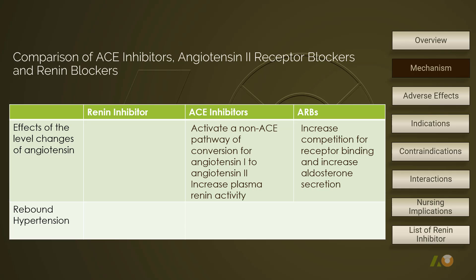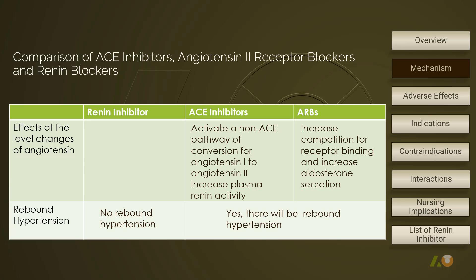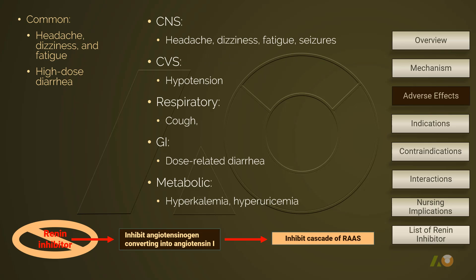As ACE inhibitors decrease the level of angiotensin 2 and increase the level of angiotensin 1, a non-ACE pathway of converting angiotensin 1 to angiotensin 2 will be activated. In addition, the low angiotensin 2 level increases plasma renin activity. Under the effect of ARBs, increased angiotensin 2 means increasing competition for receptor binding as well as increasing aldosterone secretion. While a renin inhibitor produces no rebound hypertension, both ACE inhibitors and ARBs will lead to rebound hypertension once the medication is stopped abruptly.